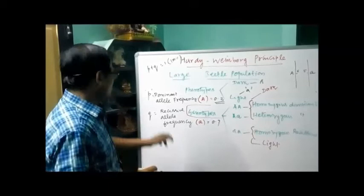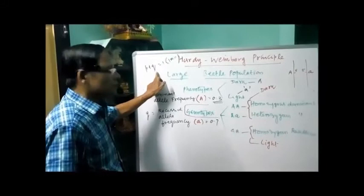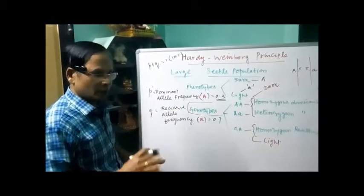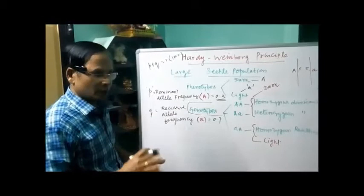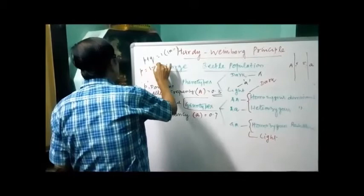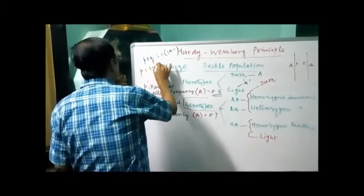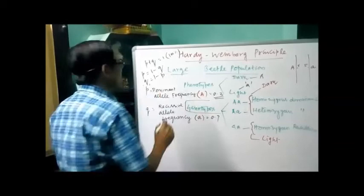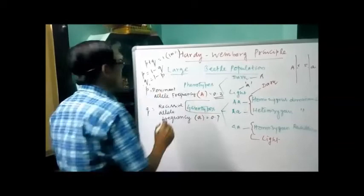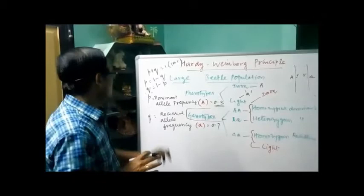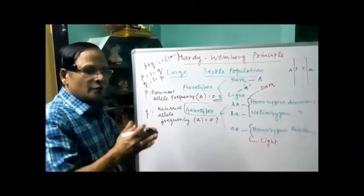P plus Q equals 1, where P equals dominant allele frequency and Q equals recessive allele frequency. P equals 1 minus Q, or Q equals 1 minus P. This is a simple way of calculating gene frequencies. We cannot calculate gene frequency directly because individuals exist as homozygous dominant, heterozygous dominant, or homozygous recessive, and by counting these individuals only can gene and genotype frequencies be calculated.